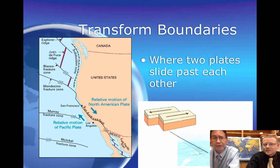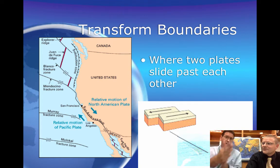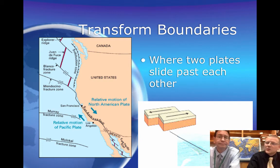The third kind of boundary is the kind where plates slide past one another — they're called transform boundaries. There's an easy way to remember this: when the transformers form, all kinds of stuff is sliding past one another. Or think of it as two plates that slide past each other — T for two plates.